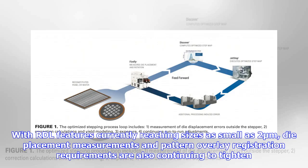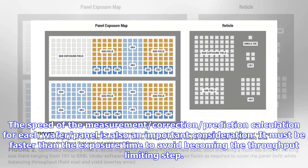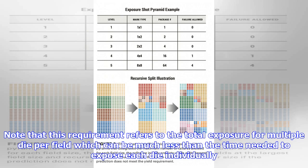With RDL features currently reaching sizes as small as 2 micrometers, die placement measurements and pattern overlay registration requirements are also continuing to tighten. The speed of the measurement, correction, and prediction calculation for each wafer panel is also an important consideration. It must be faster than the exposure time to avoid becoming the throughput limiting step.